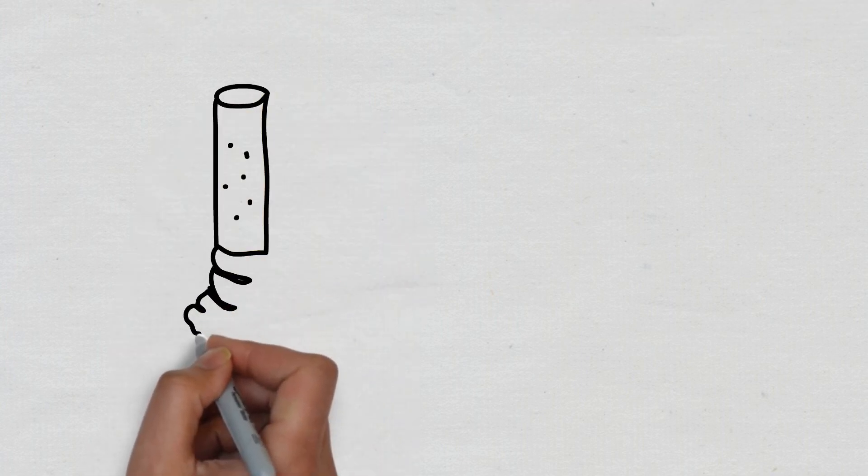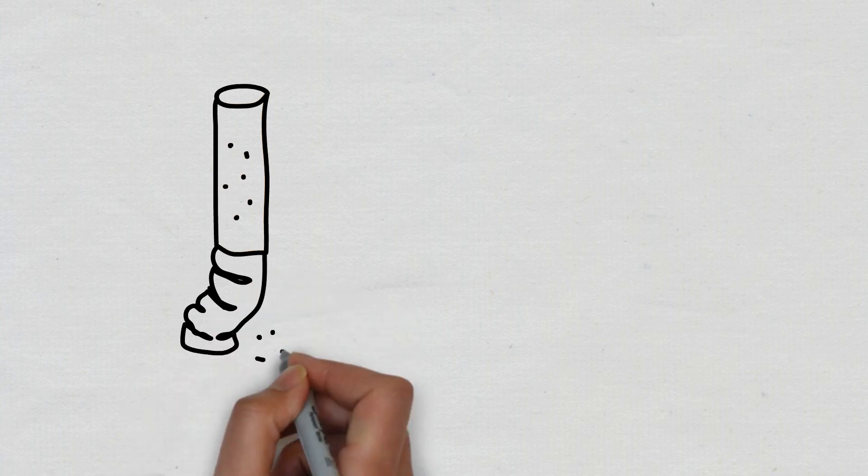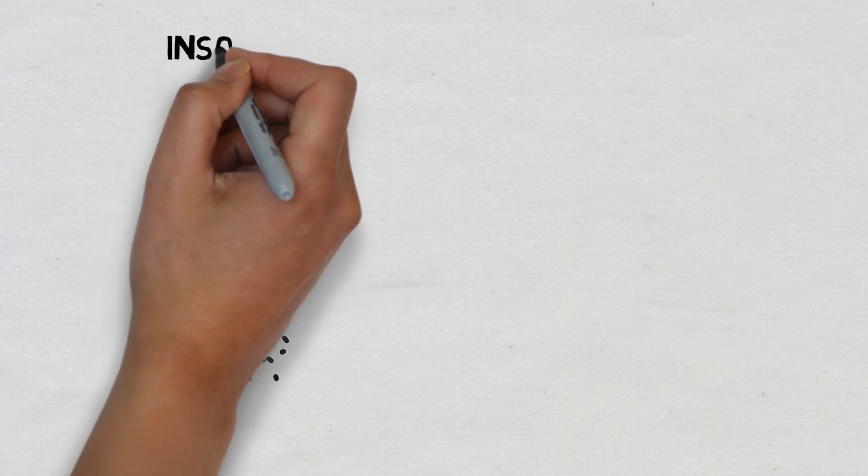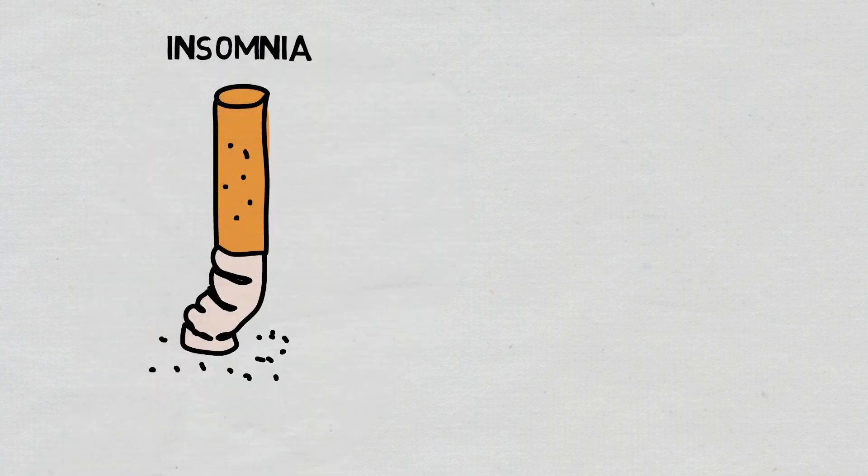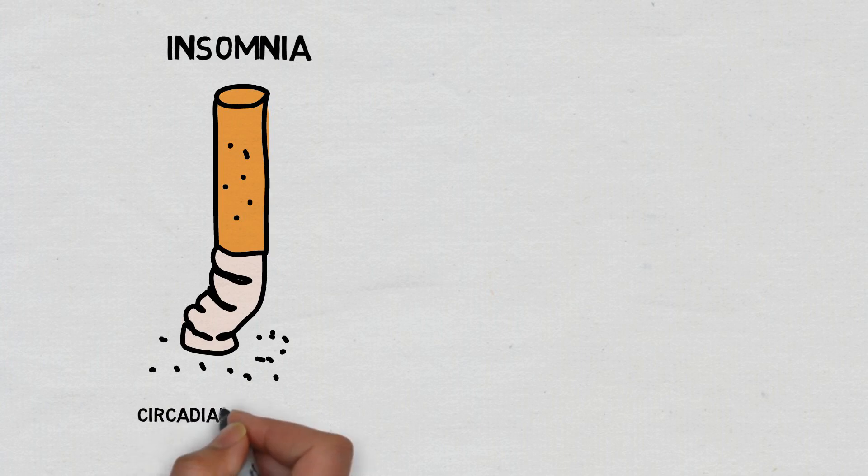The second thing to avoid is smoking, as smokers are more likely to develop insomnia. Smoking also changes your circadian rhythm, further worsening sleep quality. So if you do smoke, make sure that it's at least a few hours before you go to sleep.